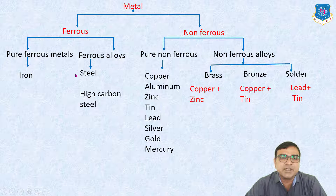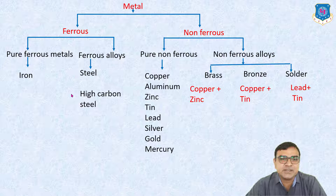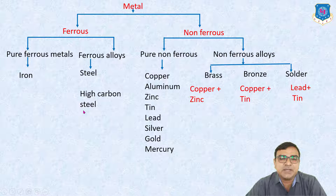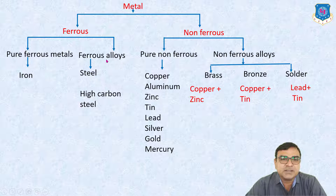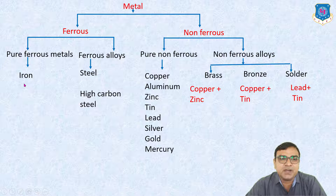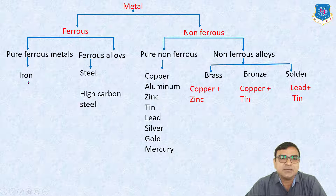Examples of ferrous alloys are stainless steel, high carbon steel, and low carbon steel. In pure ferrous metals there is only one content — iron — and iron is the example for that.